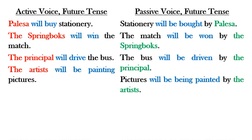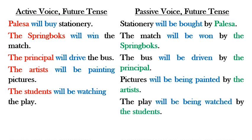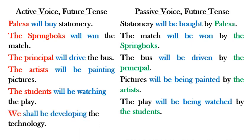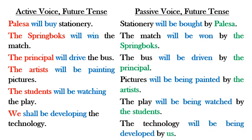Now things get more complicated and cumbersome in the future continuous passive. Active voice: 'The students will be watching the play' — no problem. But in the passive: 'The play will be being watched by the students' — it sounds terrible, even though it's grammatically correct. Similarly, 'We shall be developing the technology' becomes 'The technology will be being developed by us.' This is why sometimes it is not appropriate to use the passive voice.